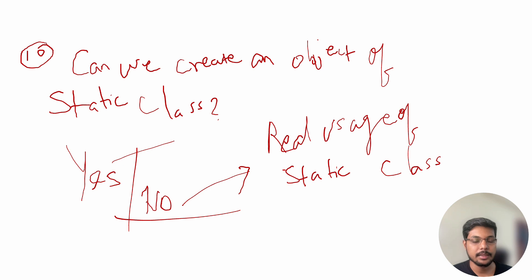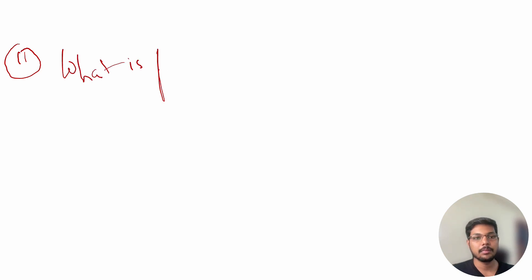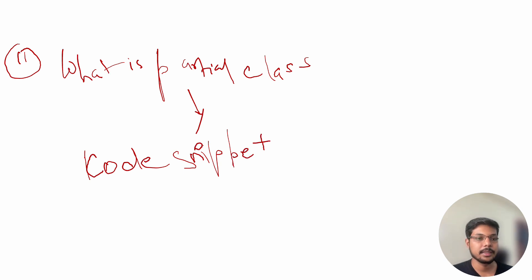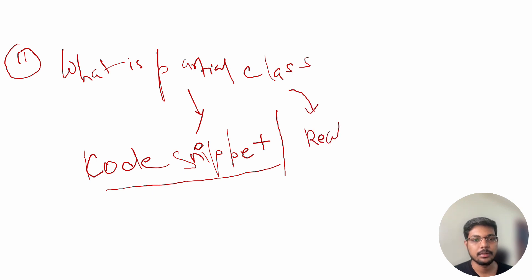Since a static class does not allow you to create an instance, you can talk about how that is actually helpful and discuss the real usage of a static class. Question number eleven is: what is a partial class? Talk about what it is, how it can be implemented in code with a code snippet, and what the real use case is.